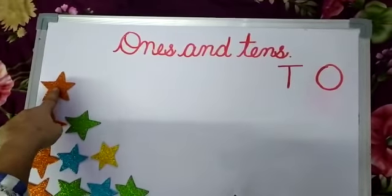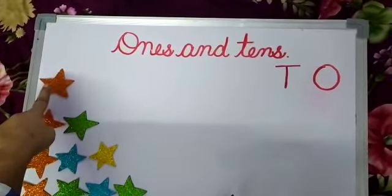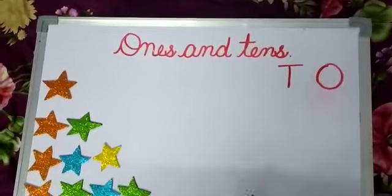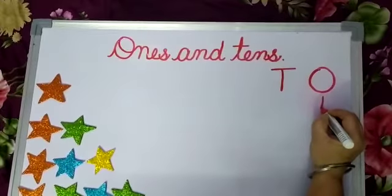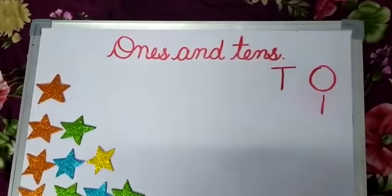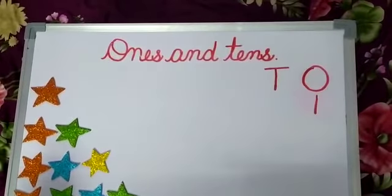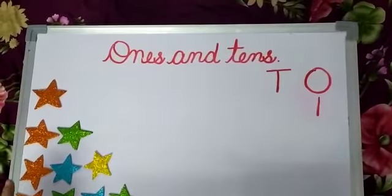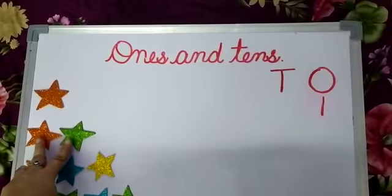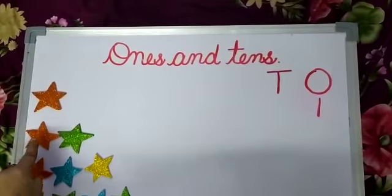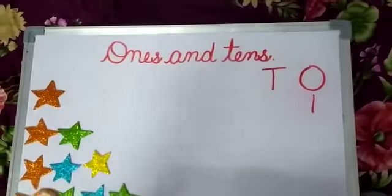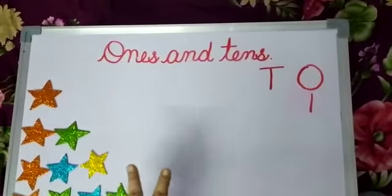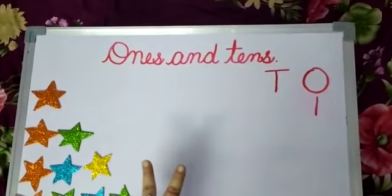Here is 1 star. How many stars? 1 star. So I will write 1 in the 1's column. Now I have 2 1's. Here I have 2 stars — 1, 2. It means I have 2 1's.